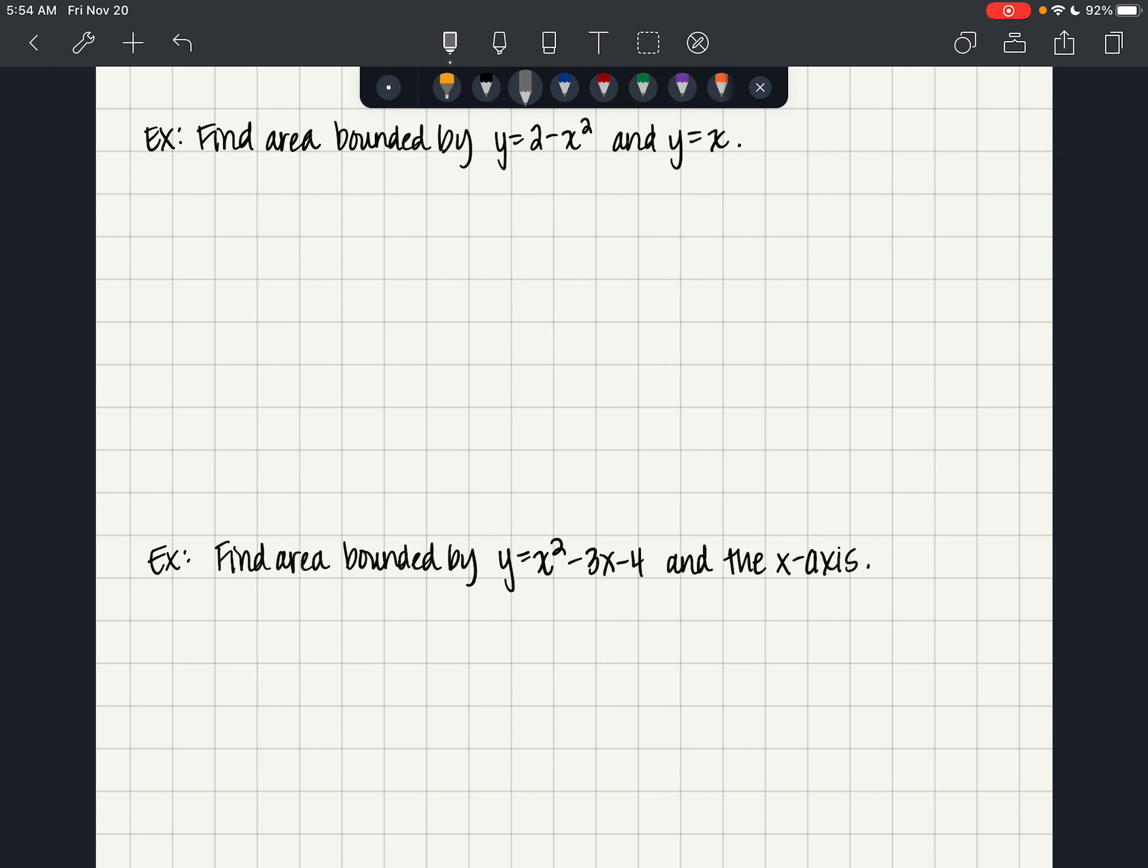In this example, find the area bounded by y equals 2 minus x squared and y equals x. We're not given the limits of integration, so we're going to assume that these two graphs are going to intersect.